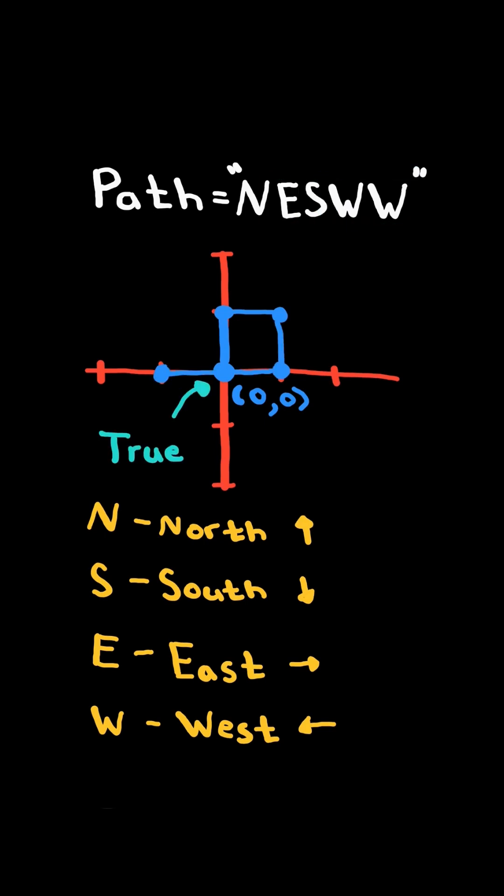Return true if the path crosses itself at any point. We will solve this in O of n time and space.